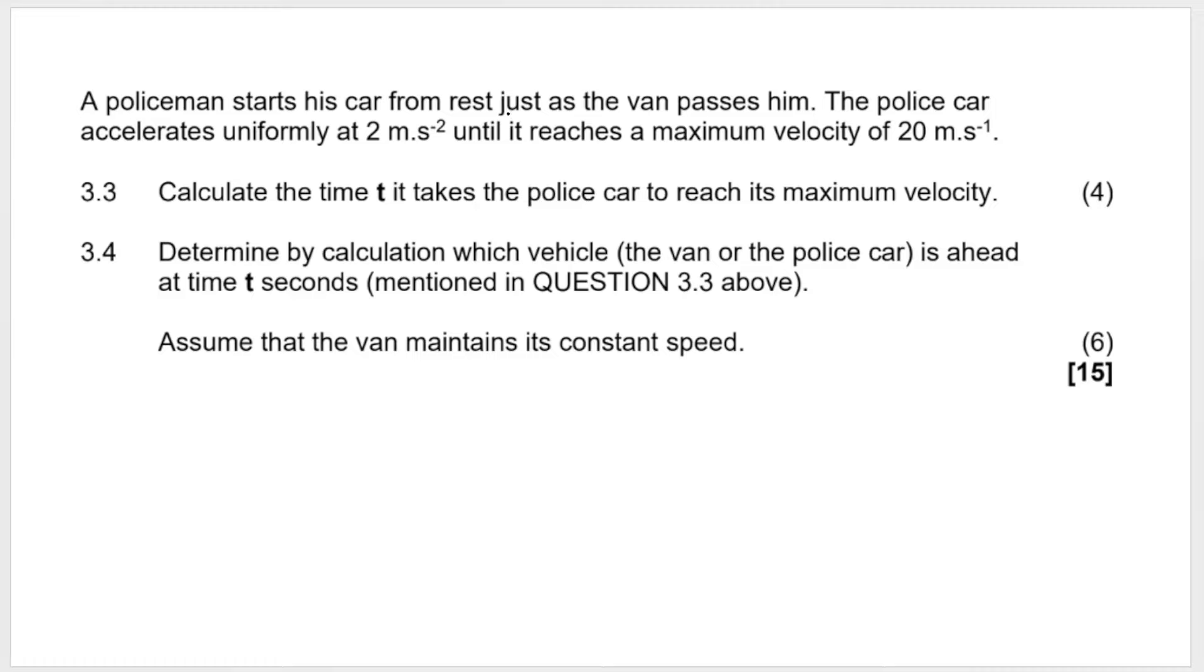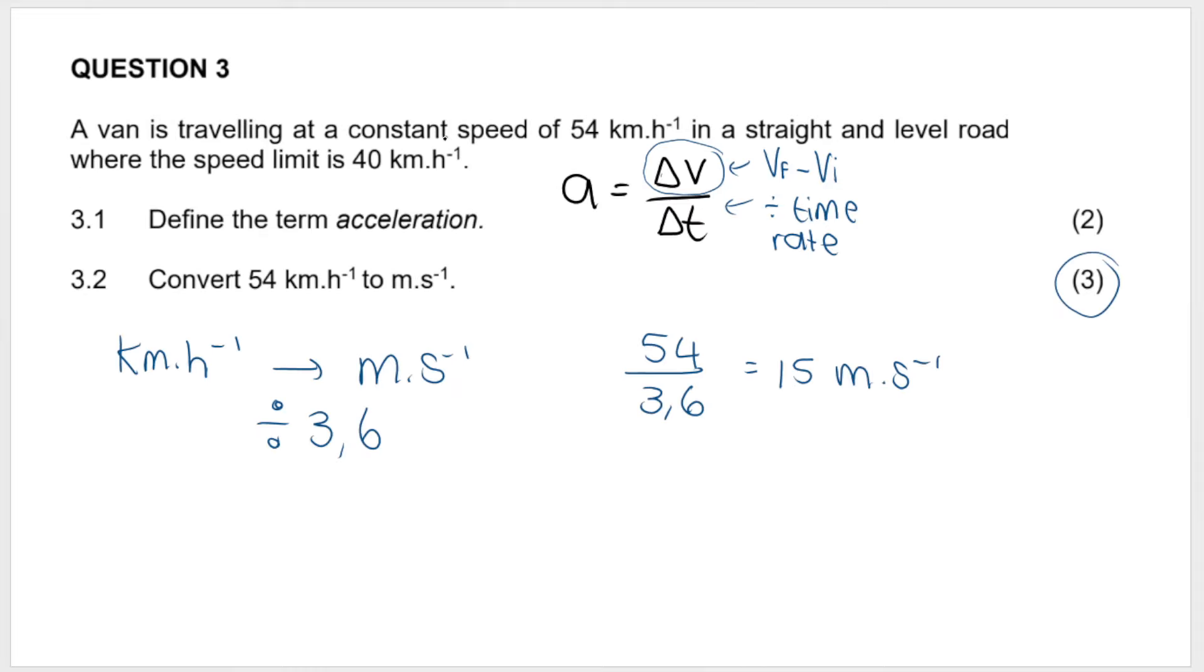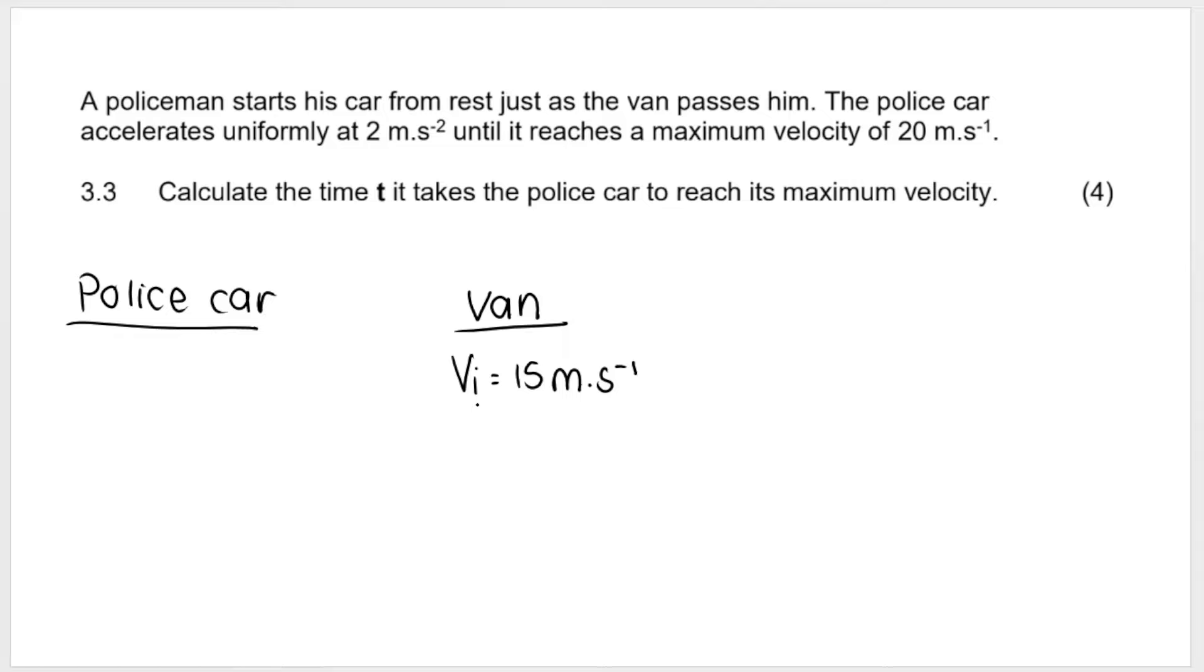A policeman starts his car from rest, just as the van passes him. So immediately we have two cars over here. The van, we originally calculated that the van is traveling at 15 meters per second. Please work with VIVF in meters per second. So my van initially was traveling 15 meters per second. The policeman starts his car from rest, which means that VI for the police car, our initial velocity, initial speed is zero. Just as the van passes him, the police car accelerates uniformly at 2 meters per second squared. So the police car is speeding up in the positive direction. Acceleration 2 meters per second squared until it reaches a maximum velocity of 20 meters per second. So we got our final velocity as 20 meters per second. All of these are going to be positive because I'm choosing to the right as positive.